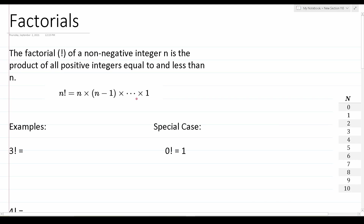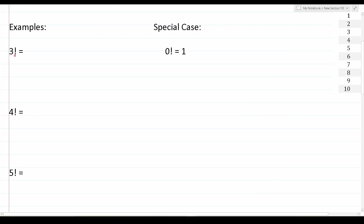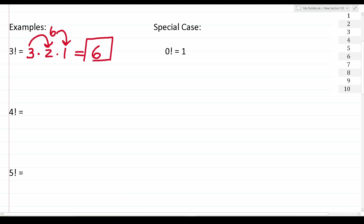Let's take a look at a few examples. For this first example, we have 3 — that exclamation point is called a factorial in math — so we have 3 factorial. According to the definition, we take our number n, which is 3, and multiply it by every positive integer less than 3 until we get to 1. So 3 factorial equals 3 times 2 times 1. What is 3 times 2? That's 6. And 6 times 1 is just 6. So 3 factorial is equal to 6.